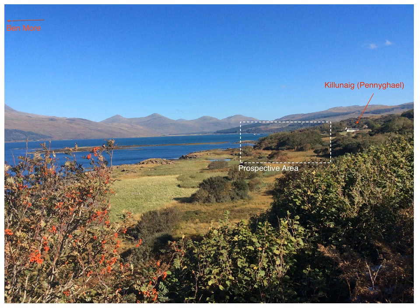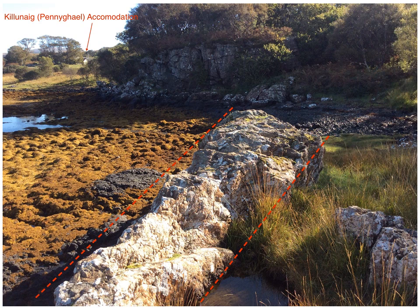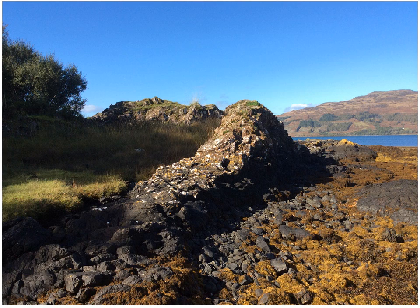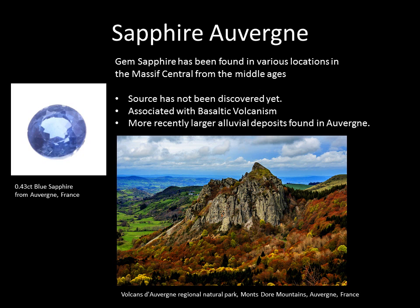I walked all the way along from Carsaig looking for these dykes — it's not easy. To make it easier: look for Pennyghael and Killunaig Heights just beyond. There's an OS map location but it doesn't take you exactly to the right spot. Some of the dykes in Mull stand out like walls because their composition is much tougher than the surrounding material, resisting weathering against the basaltic rock. So they're quite easy to spot — they literally look like walls coming up through the landscape.